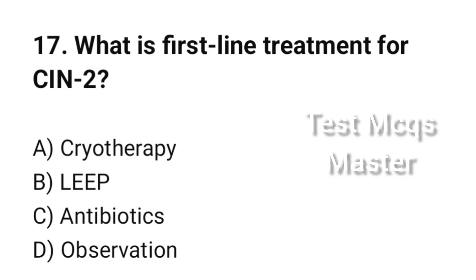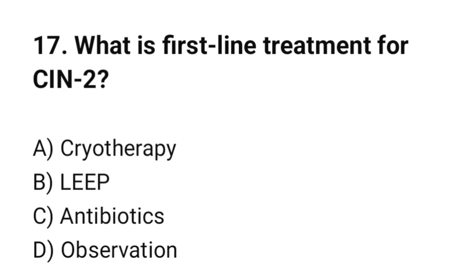Question number 17. What is the first-line treatment for CIN2? The correct option is B: LEEP (Loop Electrosurgical Excision Procedure).